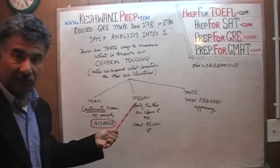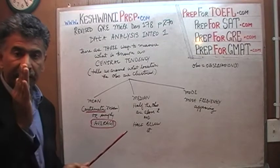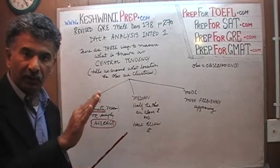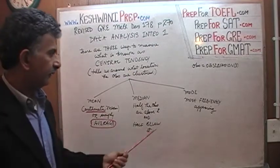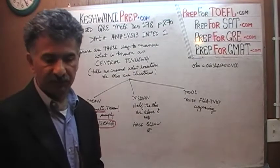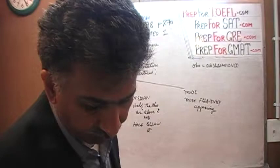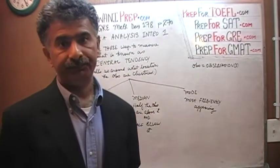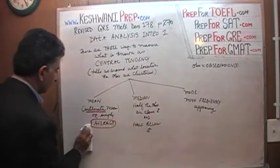The next one is median. Median tells you the point at which half the observations fall below it and half the observations fall above it. Finally, we have the mode, which is simply the most frequently appearing observation in the set of data. Let's move on to something a little bit more interesting.